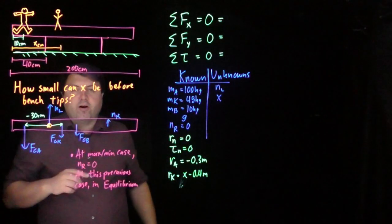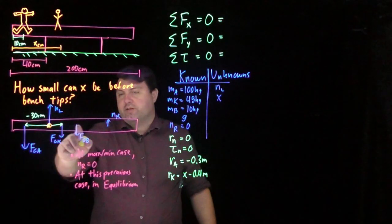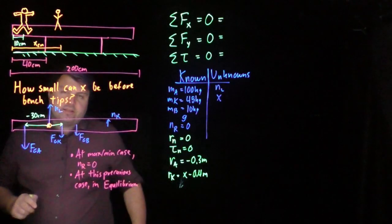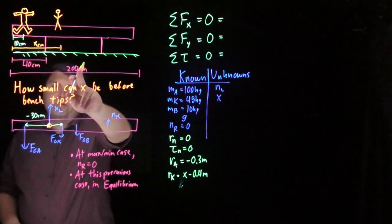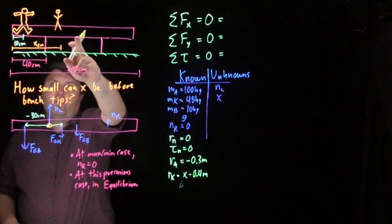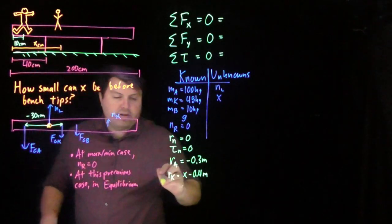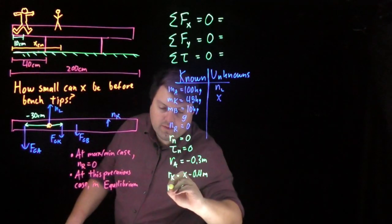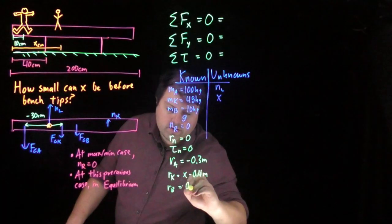And then for our bench, for any extended object, its force is exerted at the exact center, which is 100 centimeters from the edge, which is 60 centimeters from this leg. So we have r b is 0.6 meters.